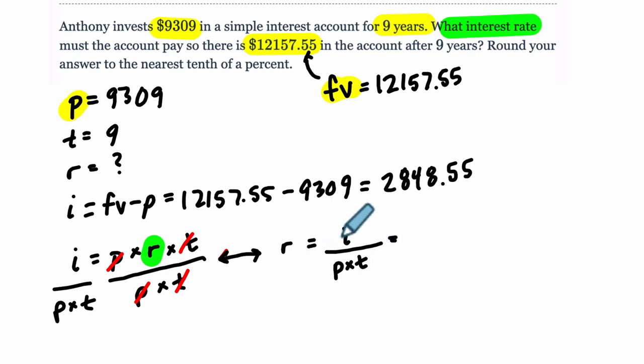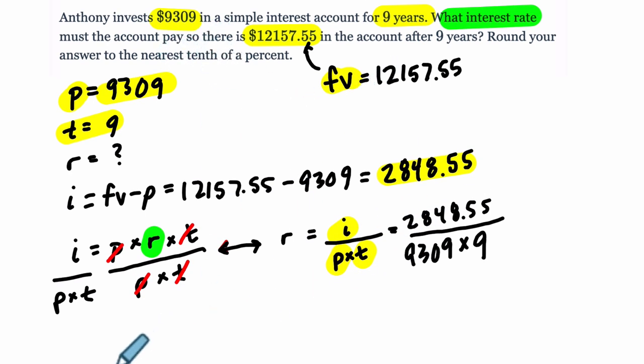I, which is this number right here. 28, no, not green. 2848.55, that's our interest. So 2848.55. And we're dividing it by what? Our principal times our time, which is 9 years. Okay, so 9309 times 9. And this will be our rate as a decimal. But notice we want this to the nearest tenth of a percent. So let's solve this. Let's get our decimal.